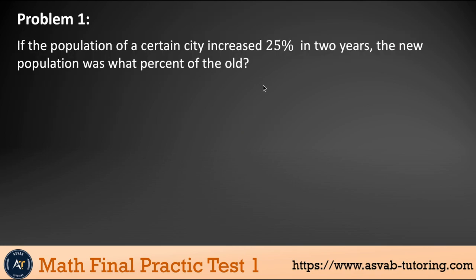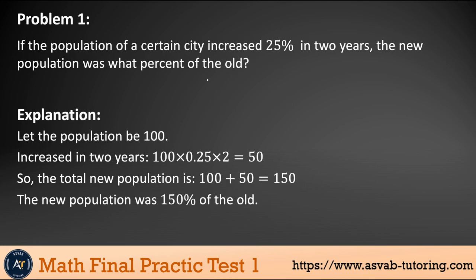The first problem: If the population of a certain city increased 25% in two years, the new population was what percent of the old? Always make sure that you read the question carefully to fully understand. Let's say the population would be 100. In one year, the population increased 25%. So 100 times 0.25 gives you 25, and then multiply by two, that gives you 50. If you add 50 with the original population of 100, that gives you 150. So the new population was 150% of old one.